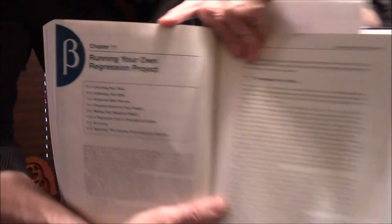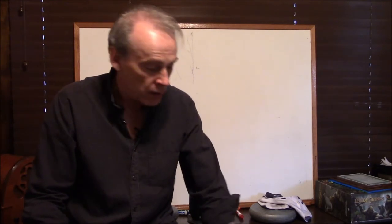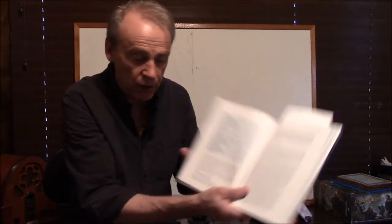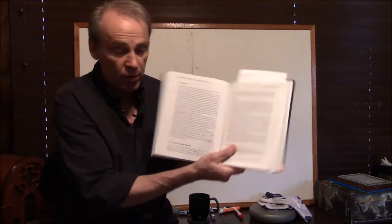The title of Chapter 11 is 'Running Your Own Regression Project.' If you're thinking of doing a regression project for another class, a senior thesis, or whatever, there is no better place to start than Chapter 11. He covers choosing your topic — a page and a half just on that — with journals you could look at for ideas, then collecting your data, the whole process of what you have to do, where to look for economic data, what to do with missing data, and advanced data sources.